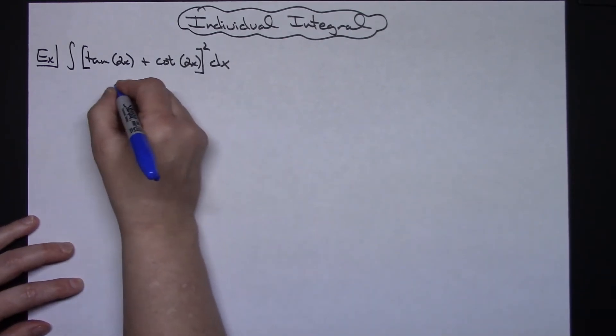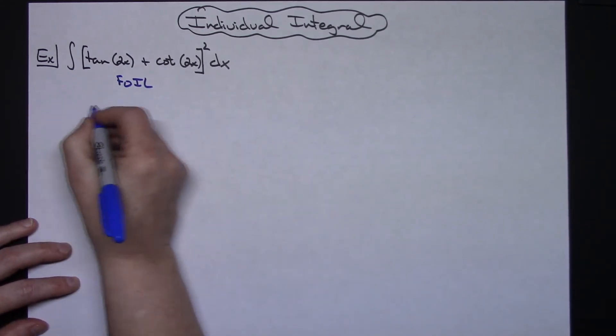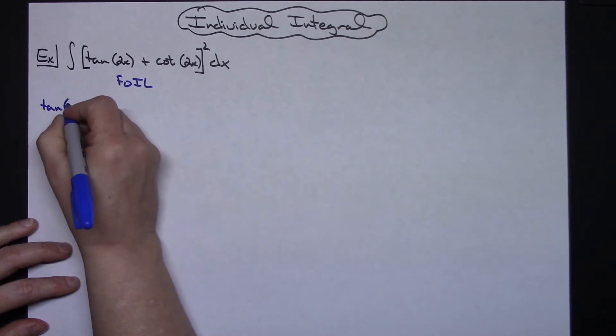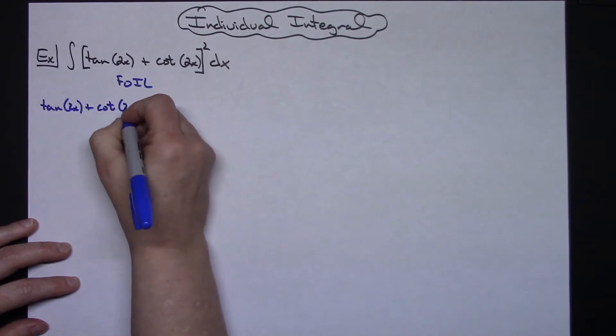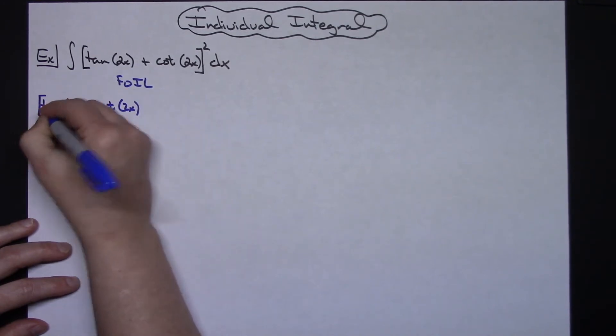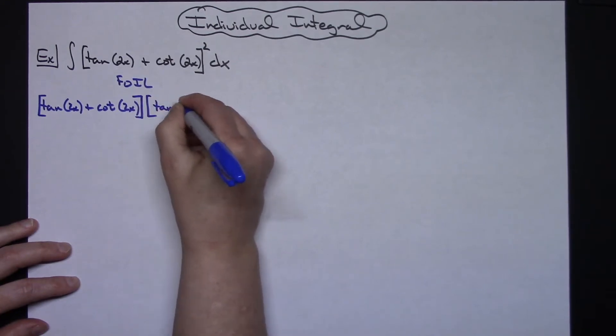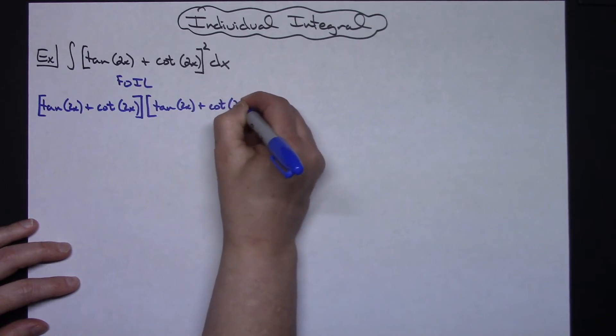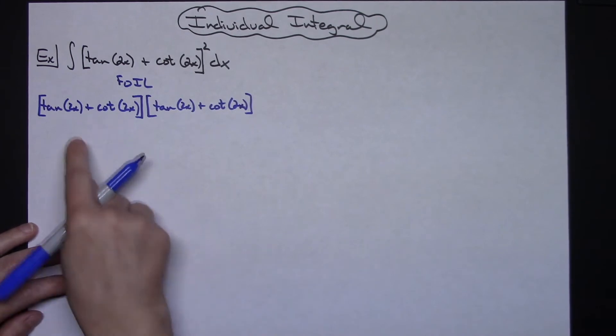So what we're going to do is we're going to foil this out and I'm going to go ahead and show all the steps because the foil is kind of nasty here. So we're going to do the tangent of 2x plus cotangent of 2x and it'll be that quantity times the tangent of 2x plus cotangent of 2x. So basically all I did was write that expression down twice so that we can foil it out.